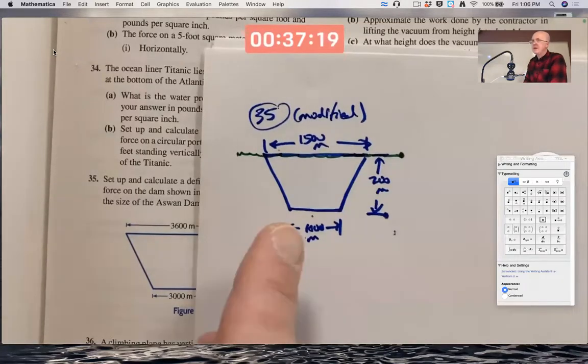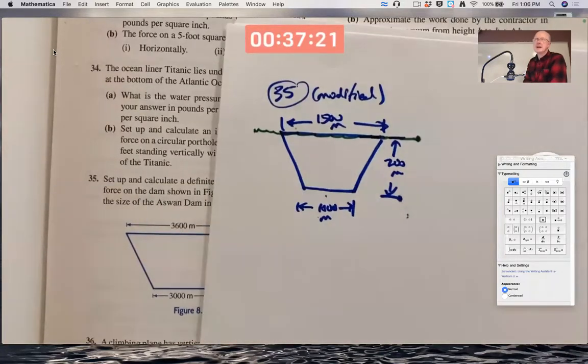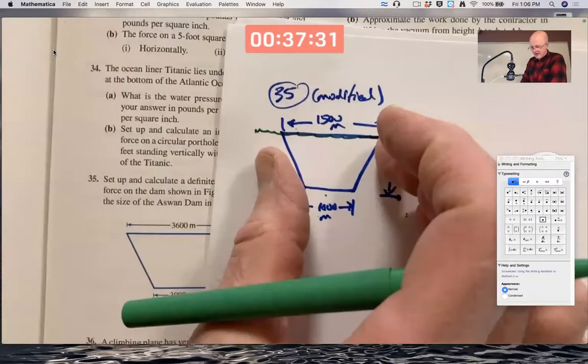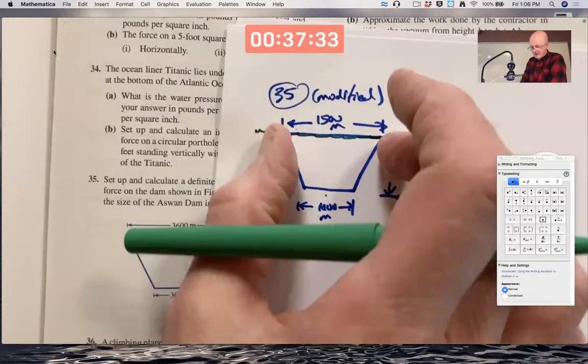To figure out the force on the dam here, we are going to have to use calculus. Maybe there's a way to approximate it or guess it exactly without calculus, but if there is, I don't know what it is. But partially because the sides of the dam are not vertical, they are slanted.